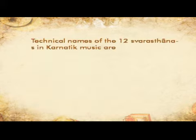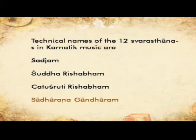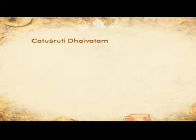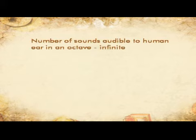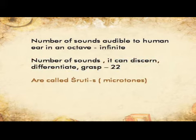The technical terms of the twelve Swarasthanas in Carnatic music are as follows: Shadyam, Shuddha Rishabham, Chatu Shruti Rishabham, Sadharana Gandharam, Antara Gandharam, Shuddha Madhyamam, Pratimadyamam, Panchamam, Shuddha Daivatam, Chatu Shruti Daivatam, Kaisiki Nishadam, and Kakali Nishadam. 22 Shrutis: The number of sounds that the human ear can hear in an octave is infinite, but the number of sounds that it can discern, differentiate, or grasp is 22. They are called Shrutis or Microtones.